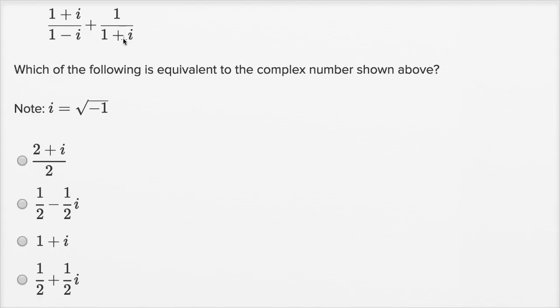When you add two fractions like this, what you might want to do is find a common denominator. The easiest way to find a common denominator is to take the product of both denominators. Let me just rewrite everything: we want to take (1+i)/(1-i) and then add that.